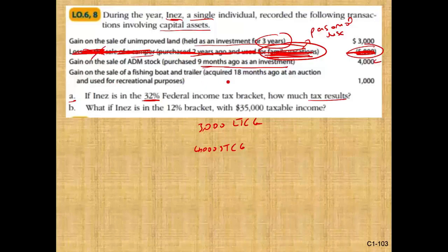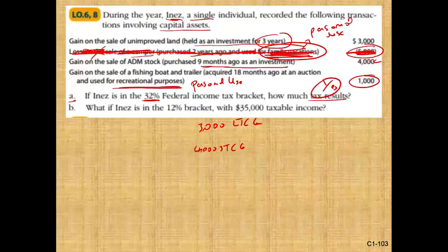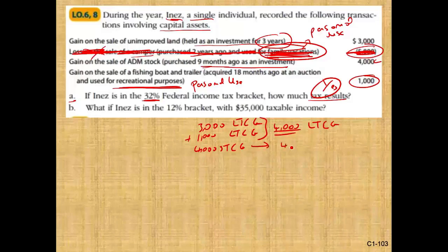Gain on sale of a fishing boat and trailer acquired 18 months ago at an auction and used for recreational purposes. You have to be careful — it's used for recreational purposes, so it's personal use. But it's a gain, so we do have to do something about it. Personal use assets sold at a gain are taxable. Losses are not deductible, but gains are taxable. And this is long-term, so we have an additional $1,000 long-term capital gain. So in total we have $4,000 long-term capital gain and $4,000 short-term capital gain.